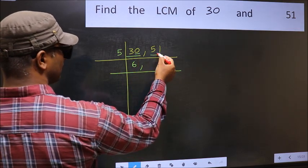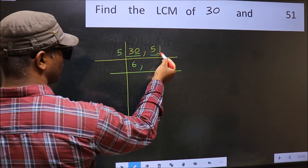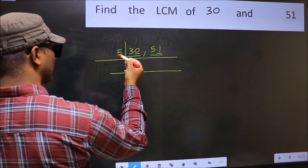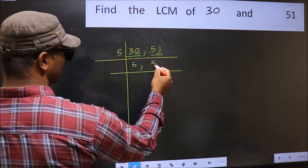The other number, 51. The last digit is neither 0 nor 5, so this is not divisible by 5. Write it down as it is.